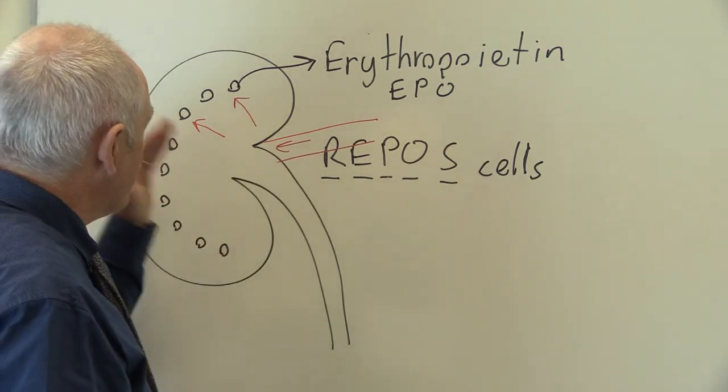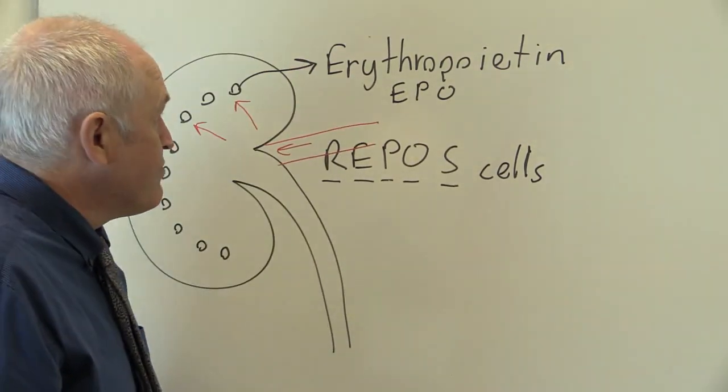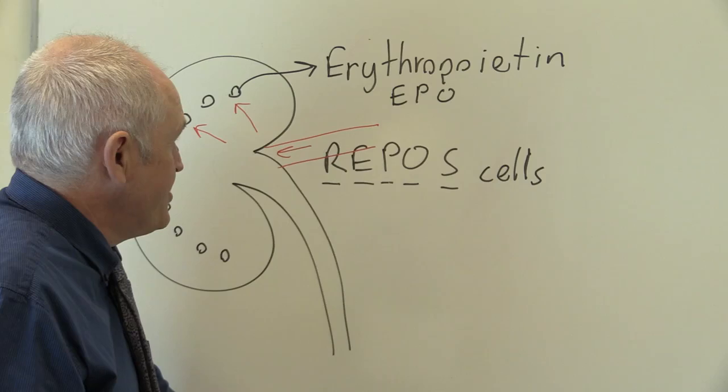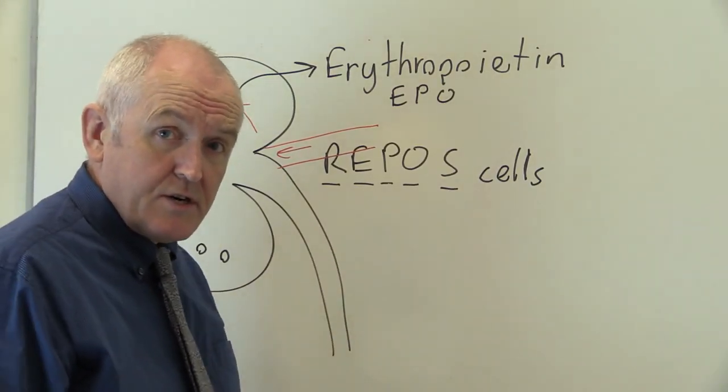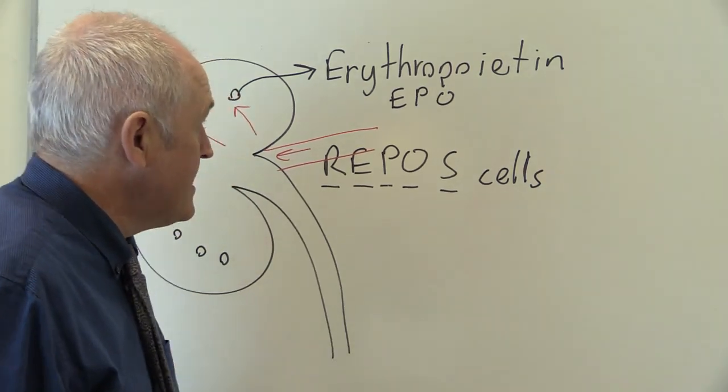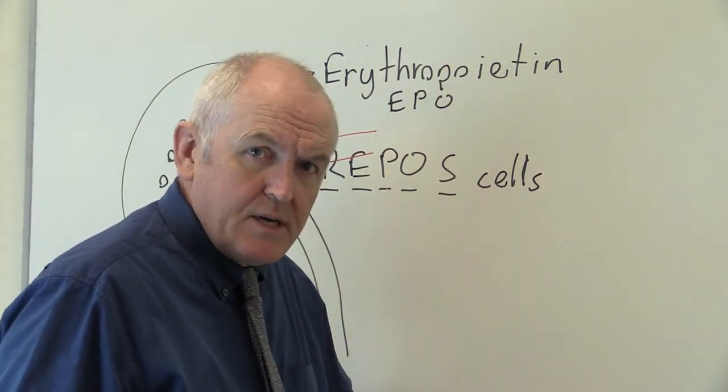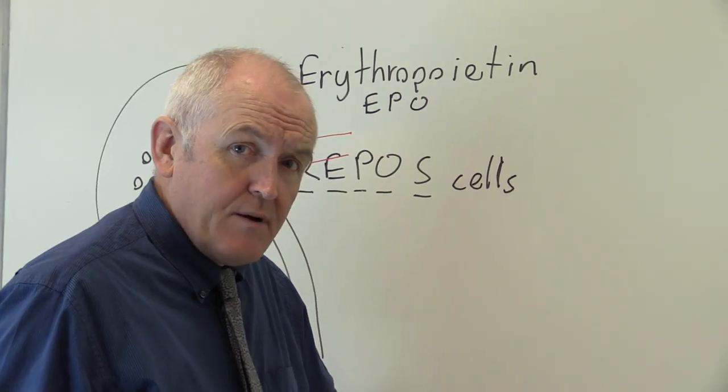So the oxygen level drops. If that happens, erythropoietin is produced. And because it's an endocrine hormone it's going to circulate, and the erythropoietin circulates in the blood to the red bone marrow.